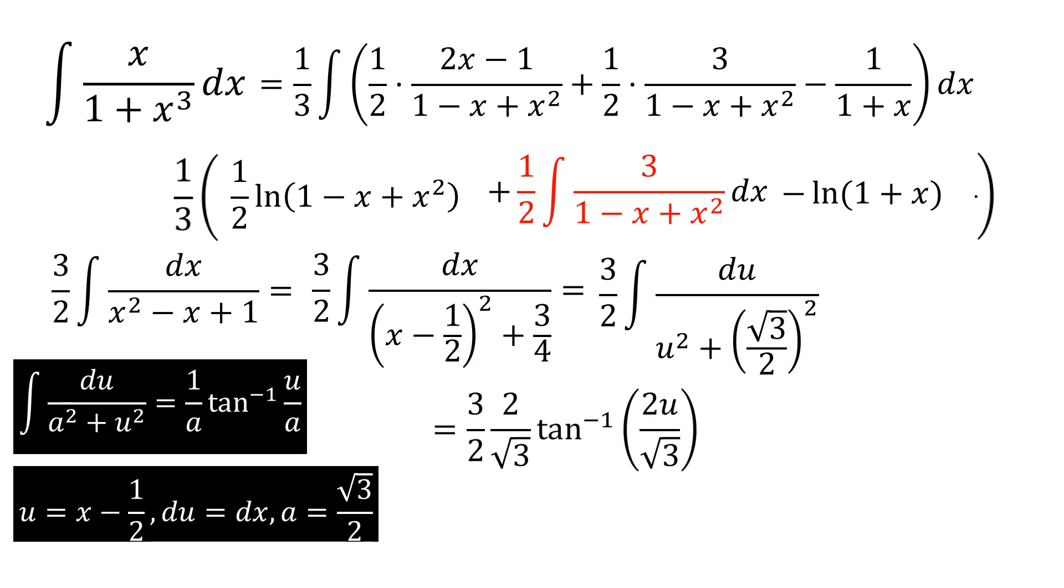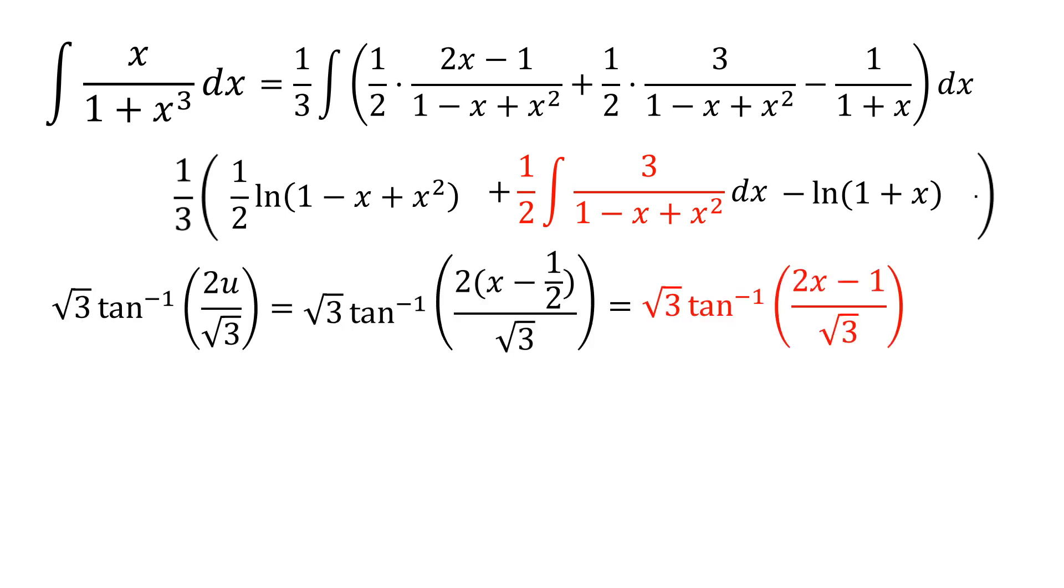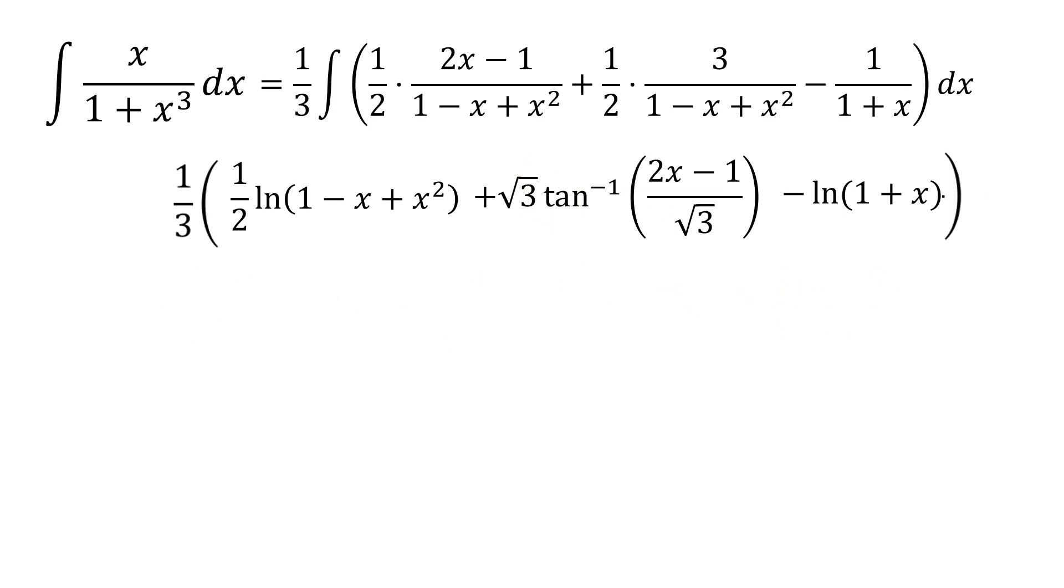In this form, my integral then becomes 3 over 2 times 2 over the square root of 3 times the inverse tangent of 2u over square root of 3. The 2s will cancel out and simply leave me with the square root of 3 times the inverse tangent of 2u over the square root of 3. I still need to substitute back in for x. And if I remember that u is equal to x minus 1 half, I obtain the square root of 3 times the inverse tangent of 2x minus 1 over the square root of 3.